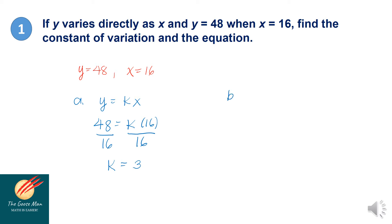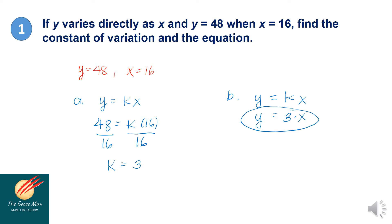Next, letter B: we want to find the equation of direct variation. Using y is equal to k times x, and taking note that k is equal to 3, we substitute that value. So y is equal to 3 times x. Therefore, the equation of the direct variation is y is equal to 3x.